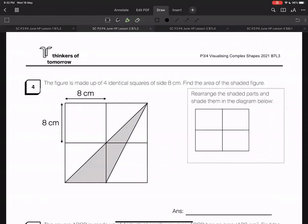The figure is made up of four identical squares of side eight centimeter. Find the area of the shaded figure. At P3 and P4 level you guys are not taught the area of a triangle formula, but fret not, all you need to do is rearrange the shaded parts.